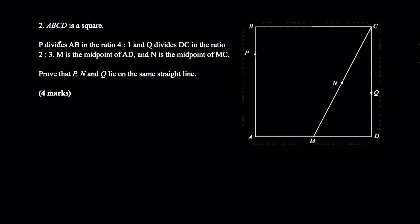Question 2. ABCD is a square. P divides AB in the ratio 4 to 1, and Q divides DC in the ratio 2 to 3. M is the midpoint of AD and N is the midpoint of MC. Prove that P, N, and Q lie on the same straight line. This is again a four-mark question. Let's interpret this on the diagram: P is on AB with 4 parts to 1, Q is on DC with 2 parts to 3, M is the midpoint of AD, and N is the midpoint of MC.